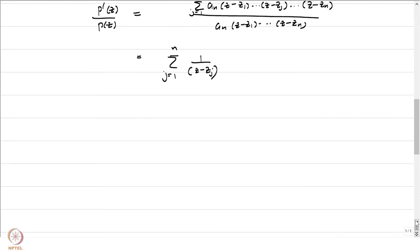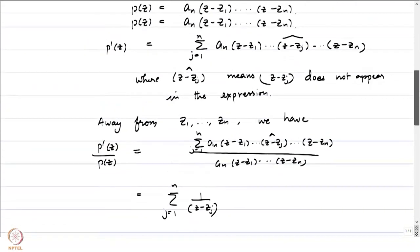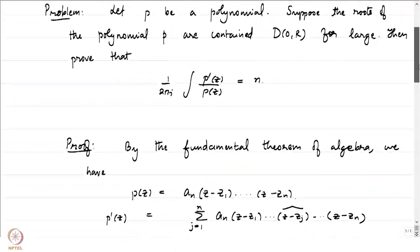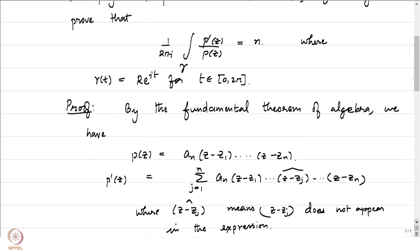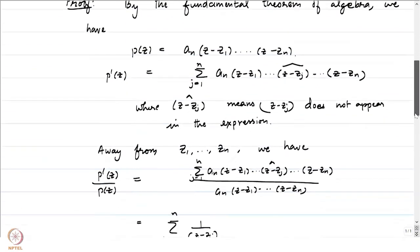This is precisely what the function will be away from the points z₁, z₂, up to z_n. The statement is that the integral over gamma equals n, where gamma(t) = r·e^(it) for t in [0, 2π]. So the integral is being taken over the circle of radius R around 0.